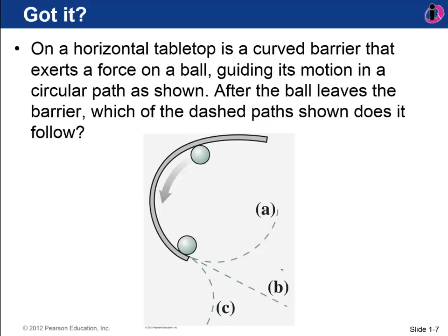Here's a question for you. A horizontal tabletop is shown here from above and there's a curved barrier that exerts a force on a ball that guides its motion in a circular path. After the ball leaves the barrier, which of the dashed paths shown, A, B, or C, does it follow? Take a pause, pause the video, think about it, and then proceed.